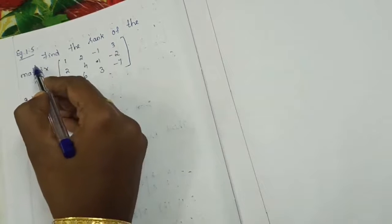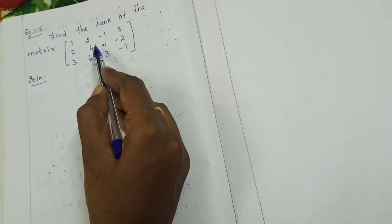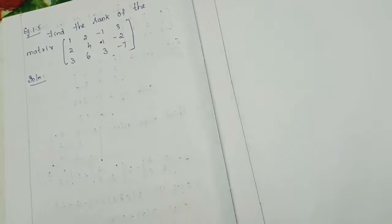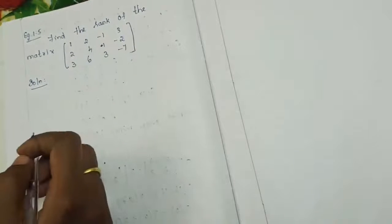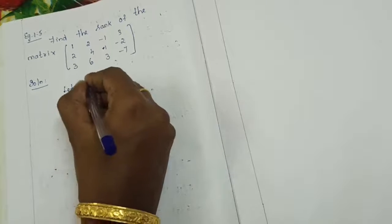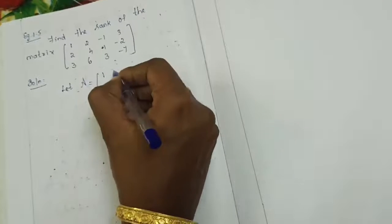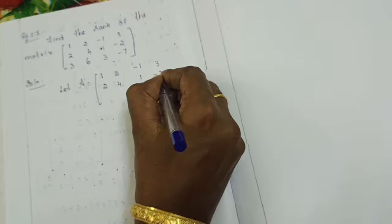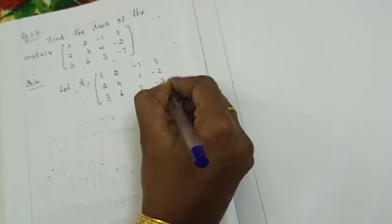Example 1.5: find the rank of the matrix 1, 2, minus 1, 3; 2, 4, 1, minus 2; 3, 6, 3, minus 7. This has 3 rows and 4 columns. Let A equal to 1, 2, minus 1, 3; 2, 4, 1, minus 2; 3, 6, 3, minus 7. The order of A is 3 cross 4.